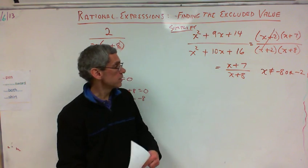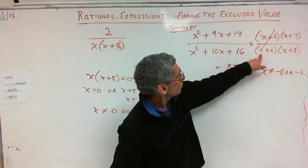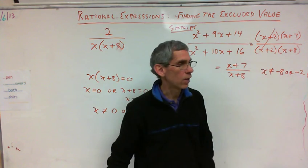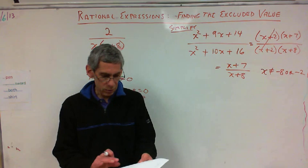Yeah. But it's really easy. This part was the hard part. This is so easy because you already know. Negative 2 and negative 8 are excluded values. That's all it is. That's excluded values.